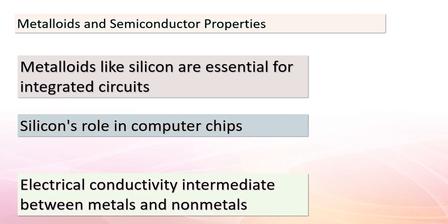Today, we're delving into the world of metalloids and their remarkable properties that make them pivotal for modern technology, with a focus on silicon. These elements play a crucial role in the creation of integrated circuits and computer chips — the heart of many electronic devices. What's fascinating is that metalloids exhibit unique semiconductor properties: unlike pure metals that are excellent conductors and non-metals that are poor conductors, metalloids strike a balance with an electrical conductivity that falls between these two extremes. But how does silicon go from being an electrical insulator to a semiconductor?